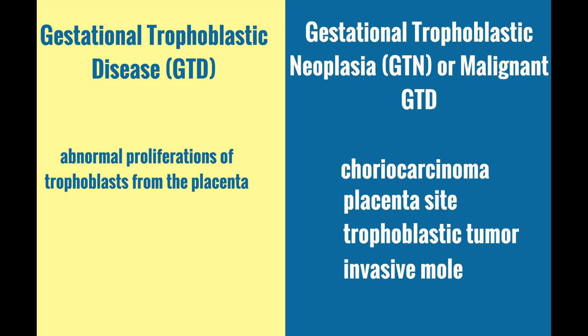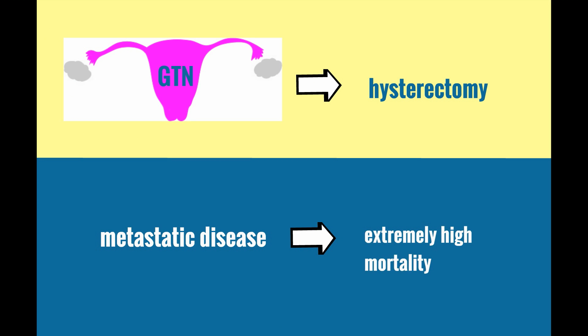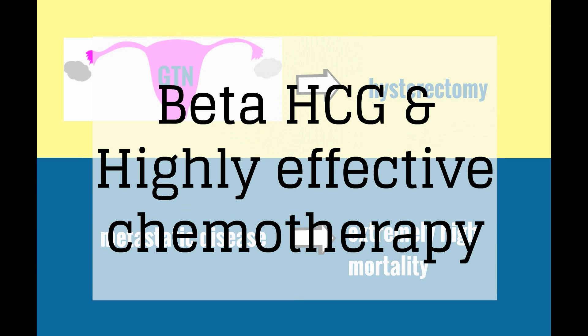These may follow a normal pregnancy or a hydatidiform mole. In the past, the majority of patients with GTN localized to the uterus were cured with hysterectomy, but metastatic disease was associated with extremely high mortality rates. Now, with the ability to measure beta-HCG levels and highly effective chemotherapy, most women with GTN can be cured and their reproductive function preserved.